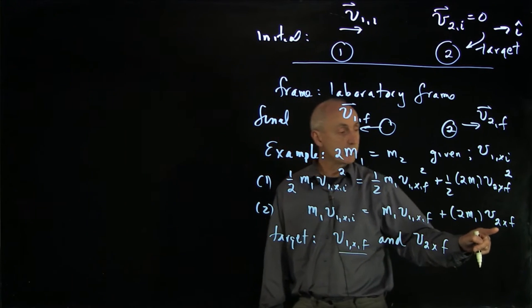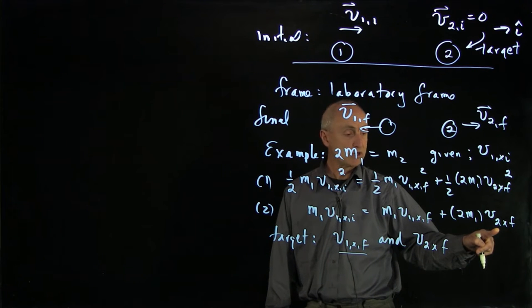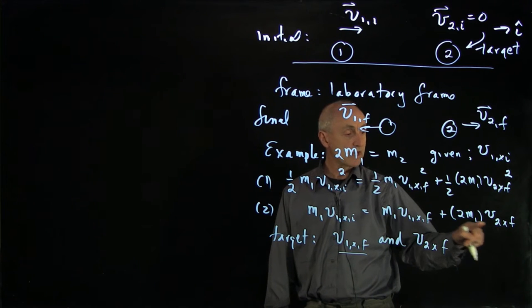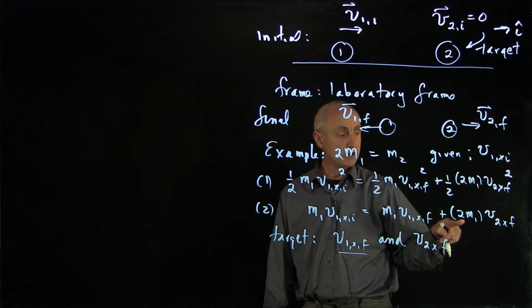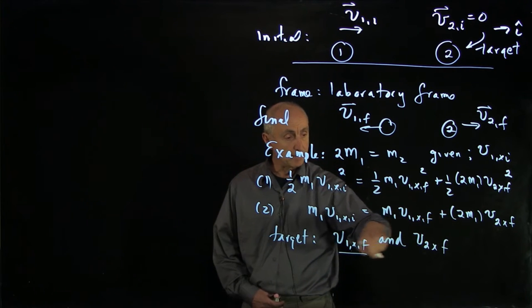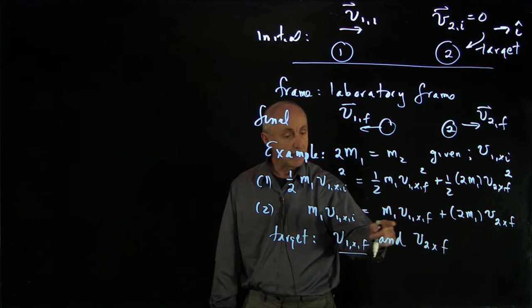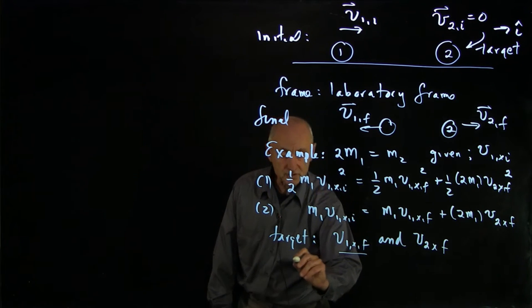The way I'll eliminate v2x final is I'll use the momentum equation. Notice that the m's will cancel in the momentum equation. If I divide through by 2m in the momentum equation and bring this term over to the other side,